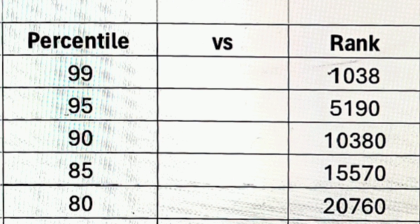At 90 percentile, CSC specialization will be available in colleges ranked 5 to 15. At 85 percentile, the rank is around 15,570 and there is a chance of getting CSC specialization in the last rounds — you may need to wait until round 3.